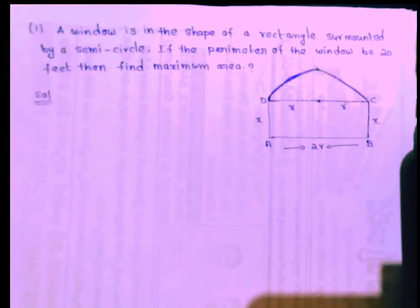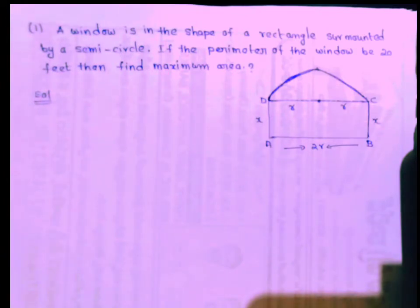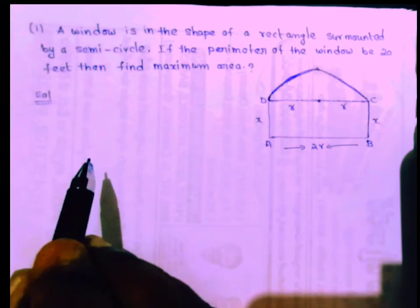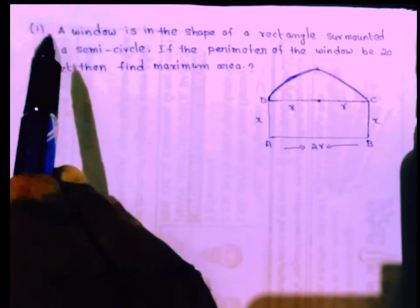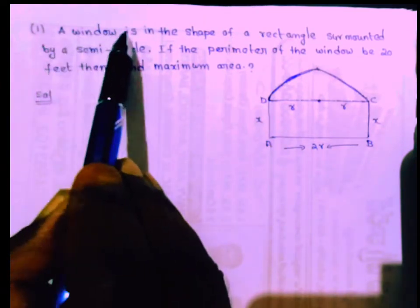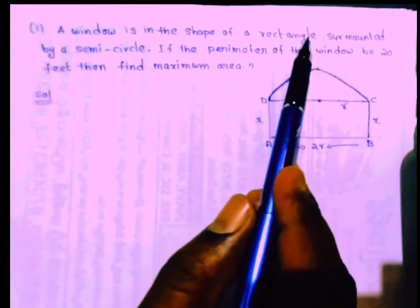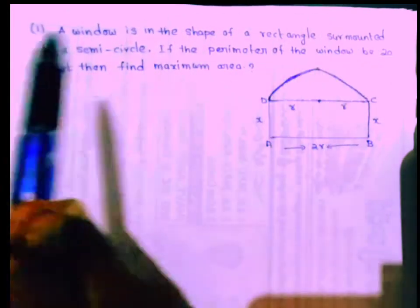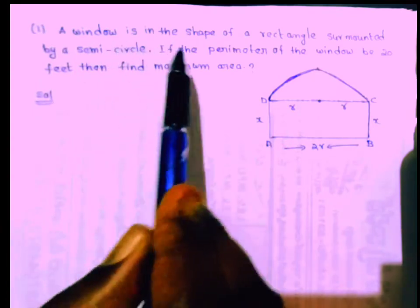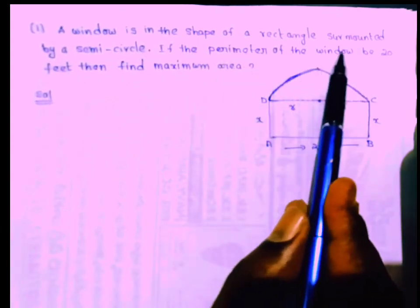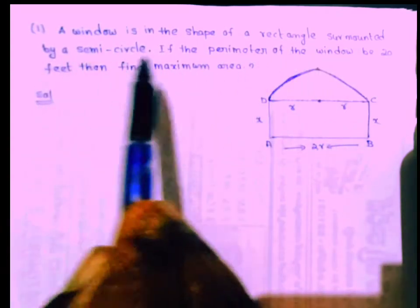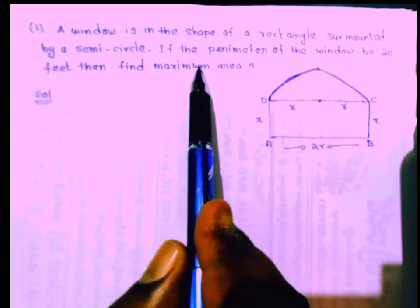Hi dear students. I am going to ask you about the maximum and minimum question. A window is in the shape of a rectangle surmounted by a semicircle. If the perimeter of the window is 20 feet, then find the maximum area.